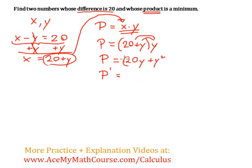So the derivative of 20y is just 20. The derivative of y squared is just 2y. Now I want to set that equal to 0 because the slope, when the slope of a function is equal to 0, it's either going to be a summit or a valley. Like the top of the hill or the bottom of the valley.